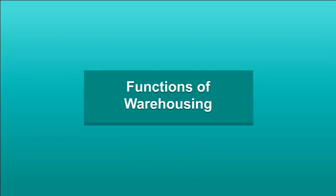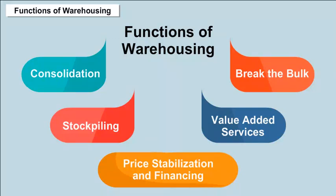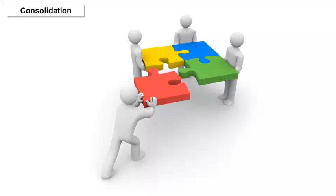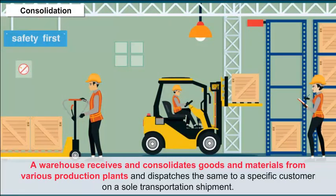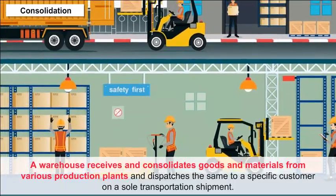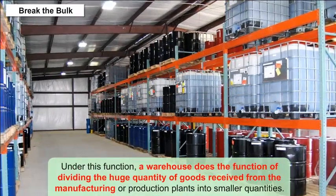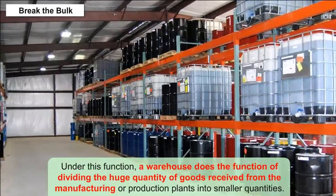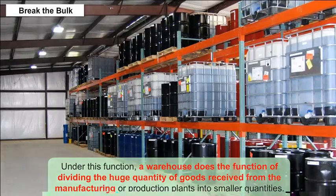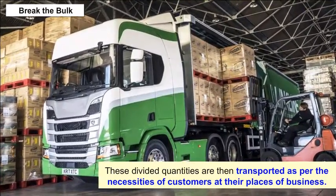Functions of Warehousing: Several important functions of modern warehouses include: Consolidation — a warehouse receives and consolidates goods from various production plants and dispatches them to a specific customer on a sole transportation shipment. Break the Bulk — a warehouse divides huge quantities of goods received from manufacturing plants into smaller quantities, which are then transported as per the necessities of customers.